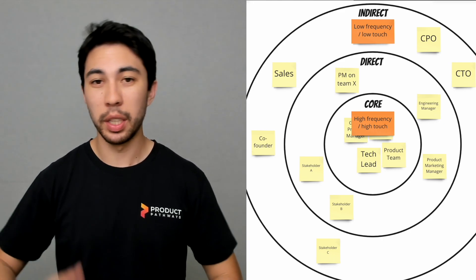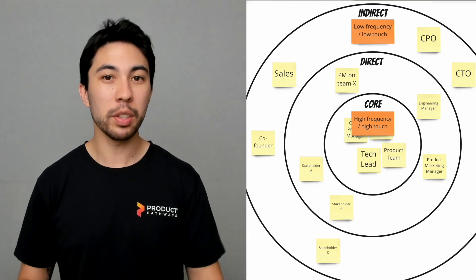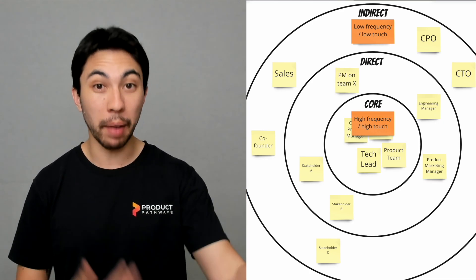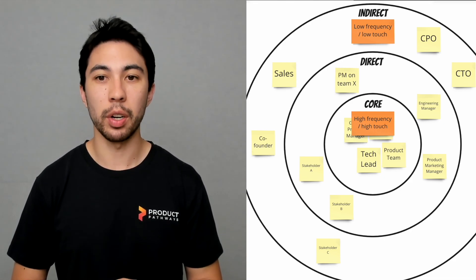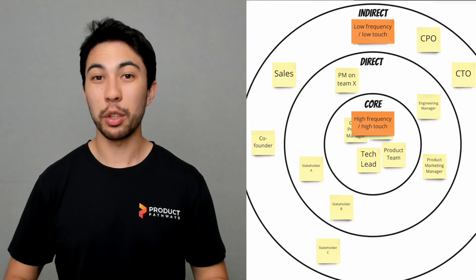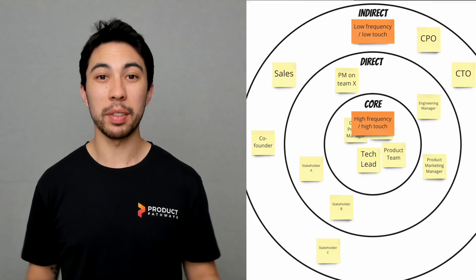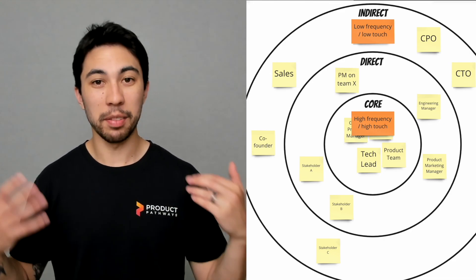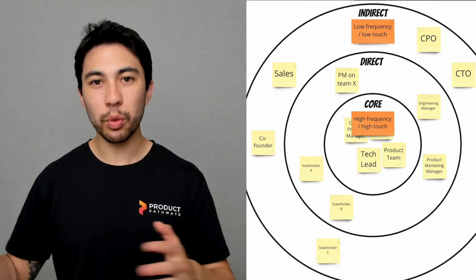When I say low frequency, I mean once a month at the absolute maximum, and then the minimum would be any type of frequency beyond that. So if you're only keeping the CPO or the founders updated once a quarter, that could be completely fine in your context. But if you're trying to keep them up to date every week, that doesn't make sense, particularly if they're an indirect stakeholder.